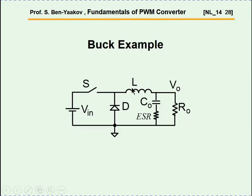We are going to look at a buck converter and see how we can design a simple controller around it. The buck converter includes the input section, a switcher, a diode, the inductor, a capacitor, and the ESR — equivalent series resistance of the capacitor — which, as we'll see, is important because you can actually use the effect of this ESR in the design of the controller. And then we have an equivalent resistor which represents the load.